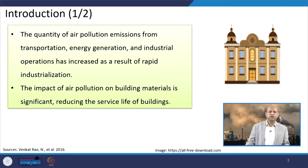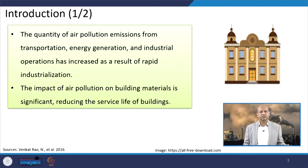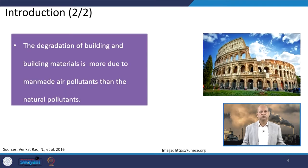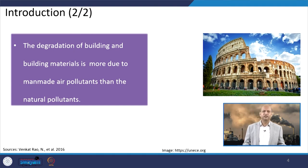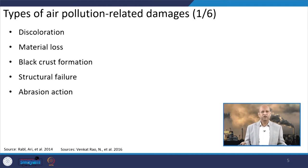When we talk about the relationship of air pollution with buildings, basically all kinds of air pollutants have certain effects on buildings. It can affect the building's appearance as well as damage the structural components, thus it can reduce the life of the building. It is also found that air pollutants emitted by manmade activities are more responsible, in comparison to natural pollutants, for damaging buildings.